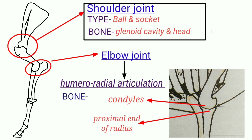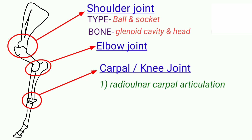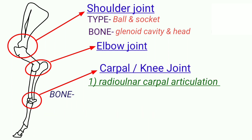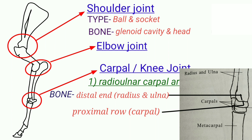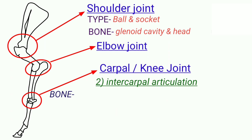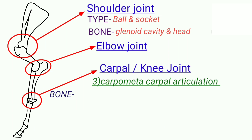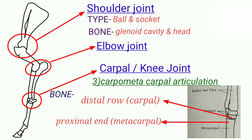Third joint is the carpal or knee joint. In this, three joints are present: first is radial-carpal articulation, second is intercarpal articulation, and third is carpometacarpal articulation. The type of joint is hinge joint. The bones involved in radial-carpal articulation are the distal end of the radius and ulna with the proximal row of carpals. The bones involved in intercarpal articulation are between the proximal and distal row of carpals. The bones involved in carpometacarpal articulation are the distal carpals with the proximal end of the metacarpal.